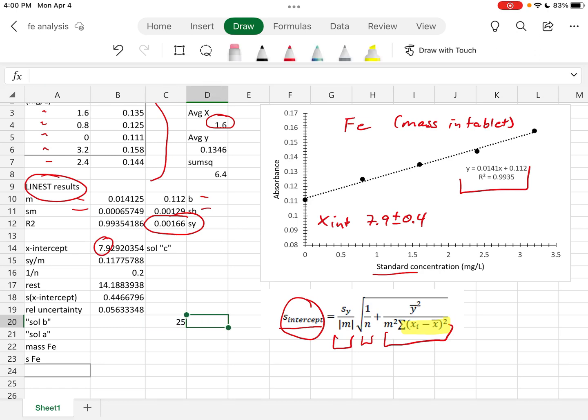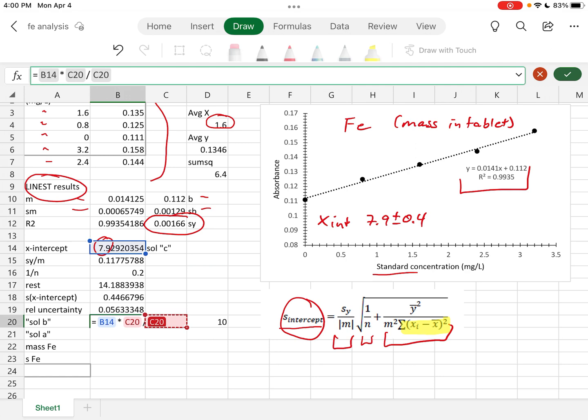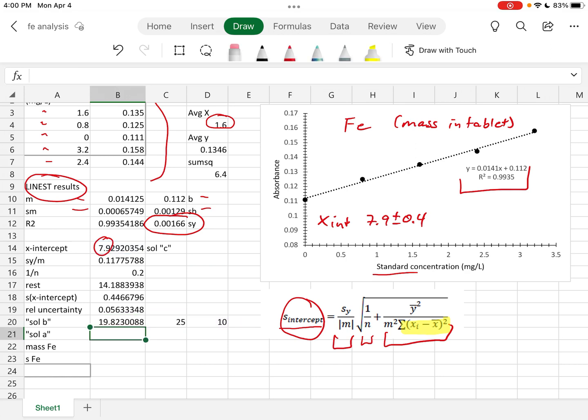We made a final volume of 25 milliliters but in this experiment we used 10 milliliters of solution B to create solution C. So that means the concentration of solution C times its volume divided by the volume of solution B should give us the concentration of solution B.